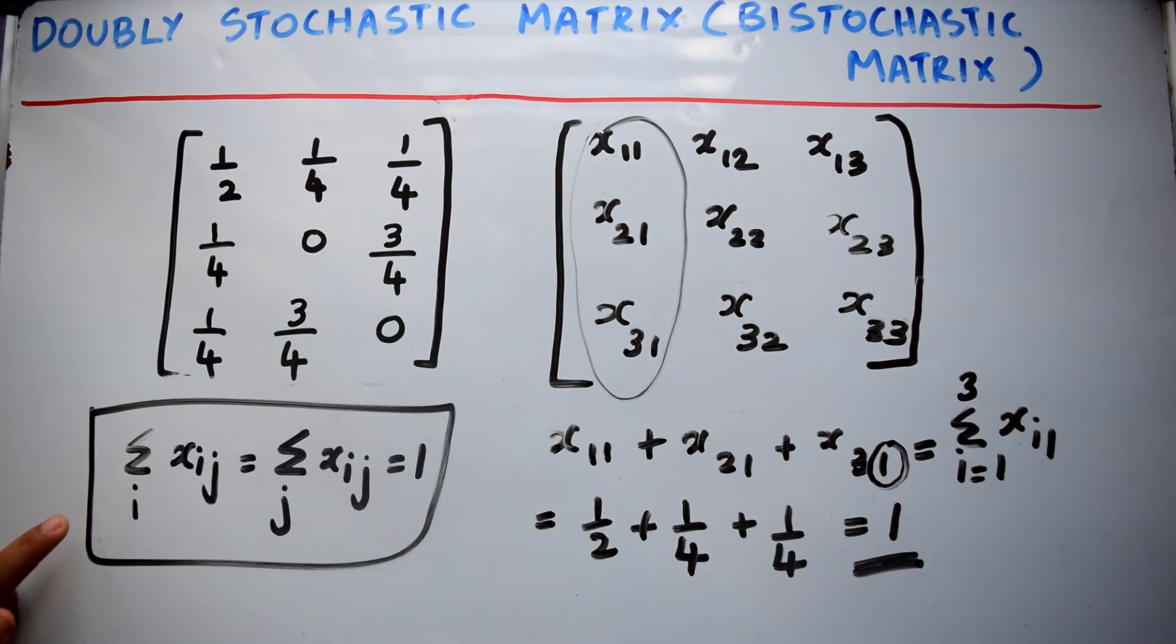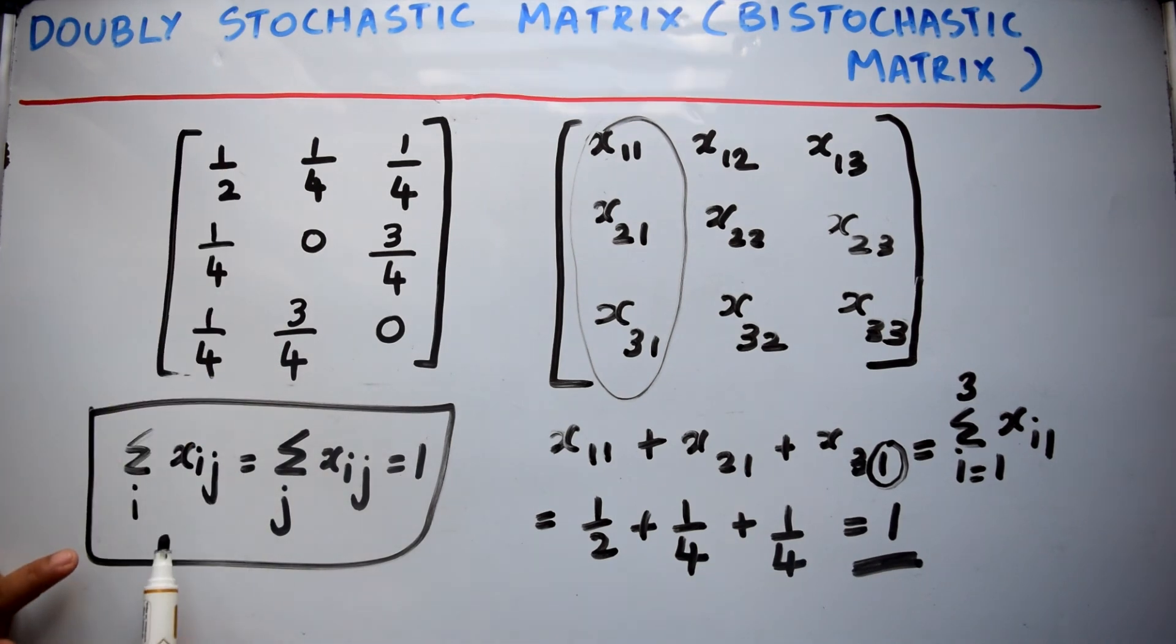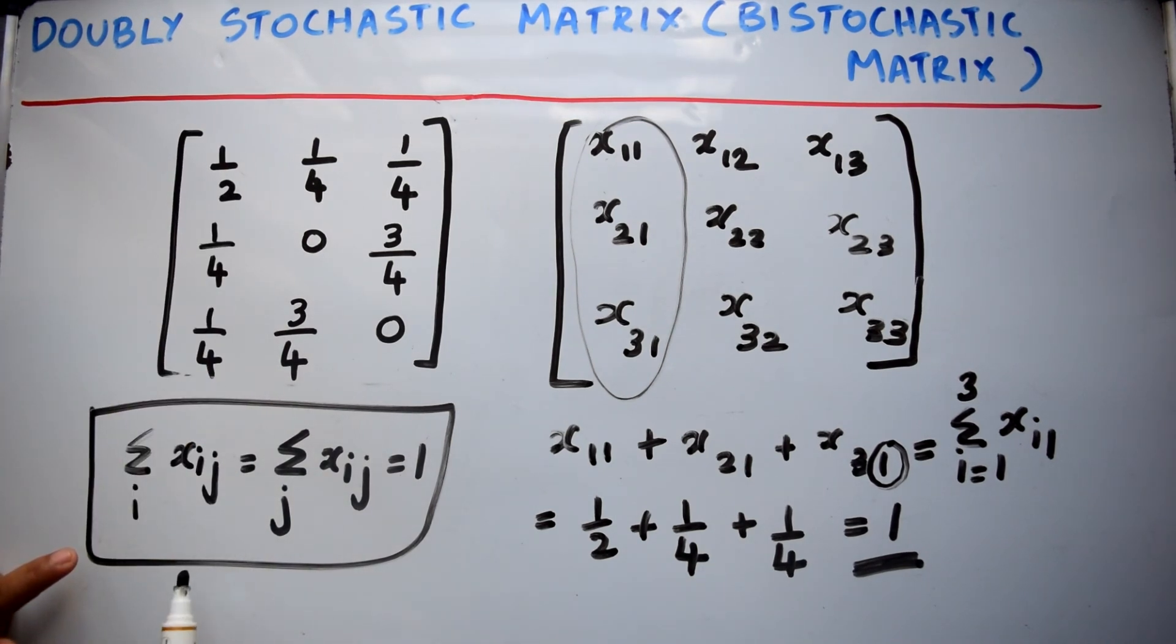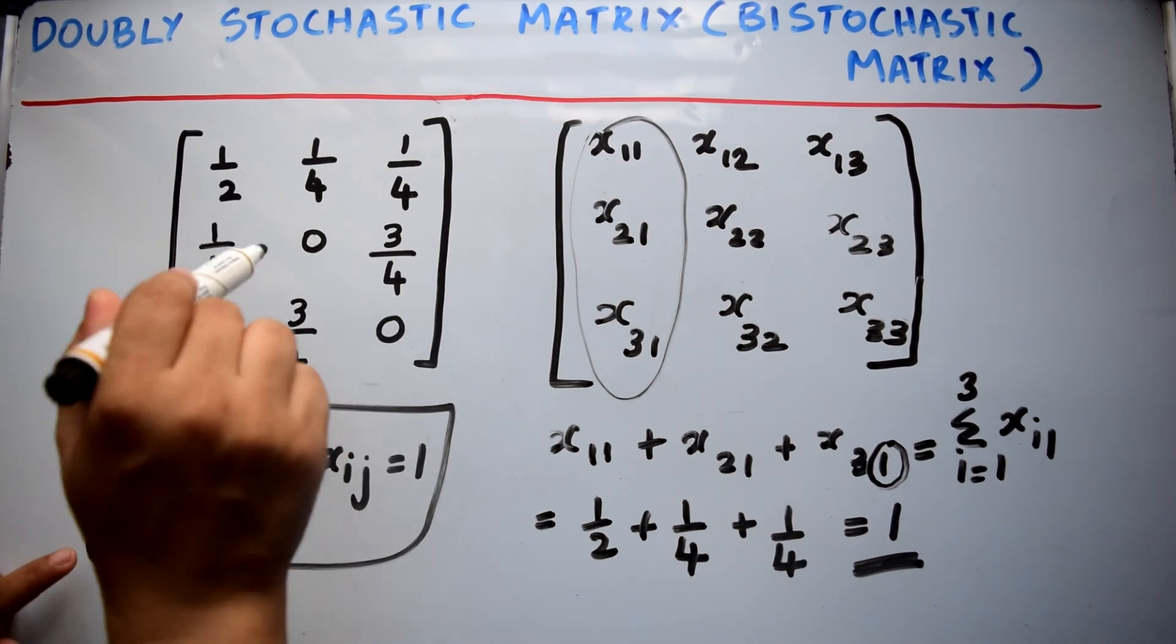Σi xij indicates you are adding all the elements in a column. Σi xij = 1 means in that column you get the sum equal to 1.